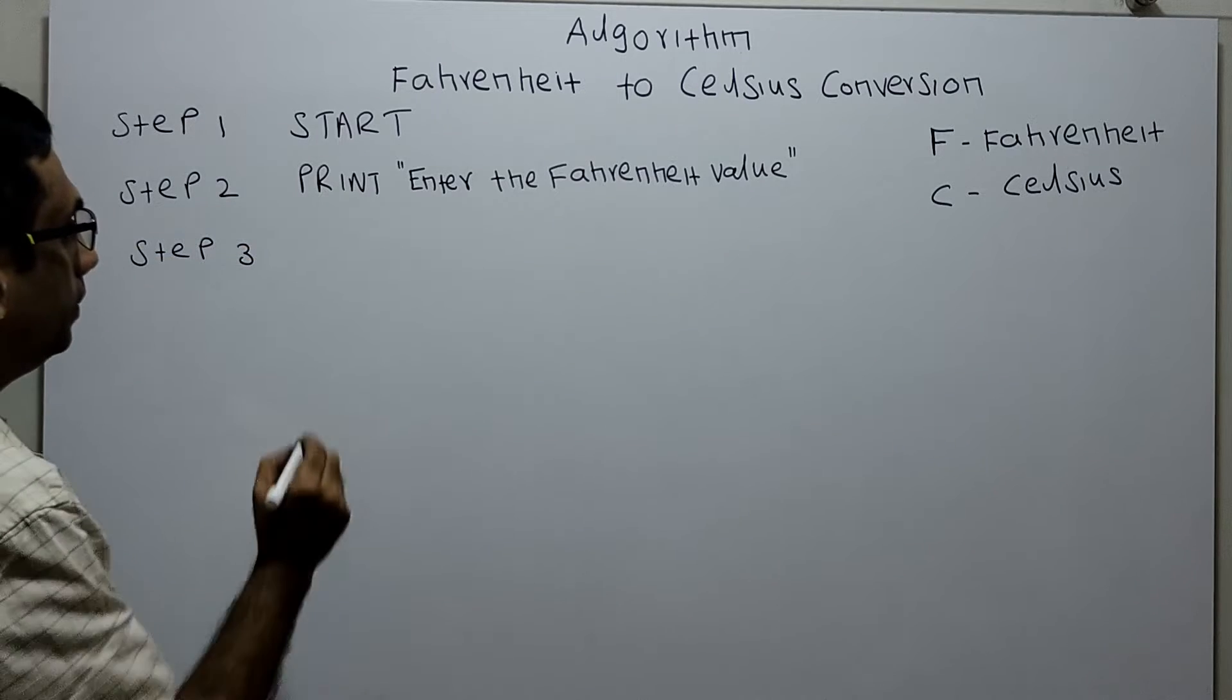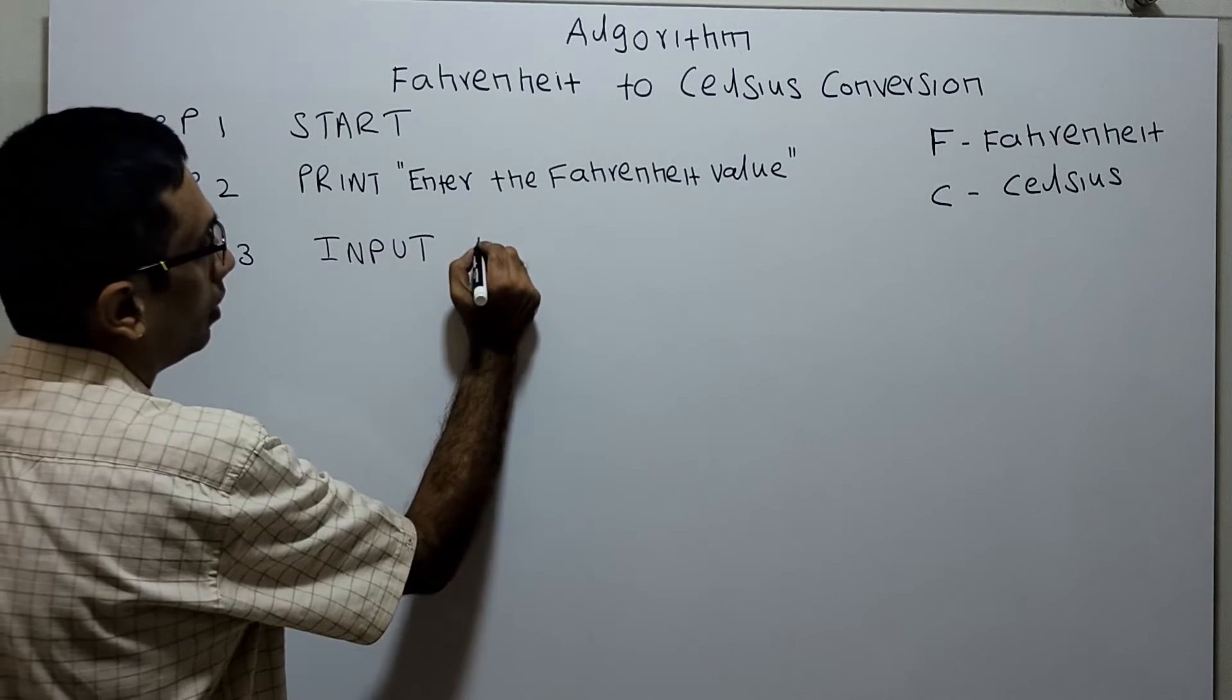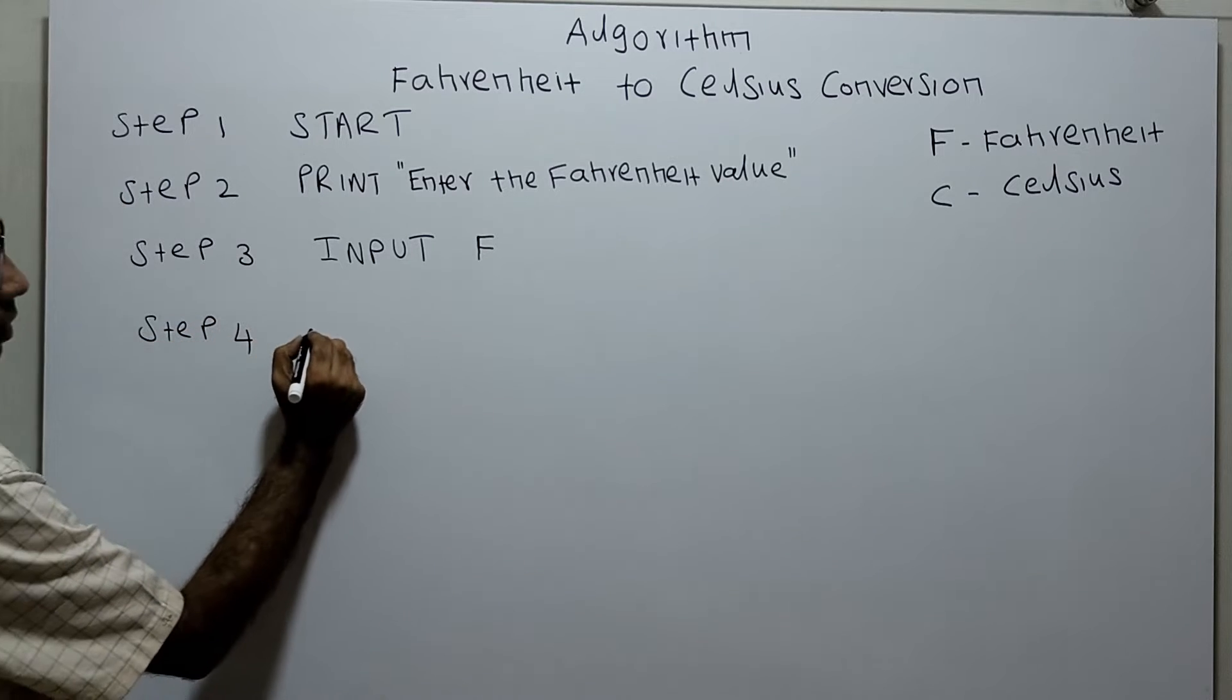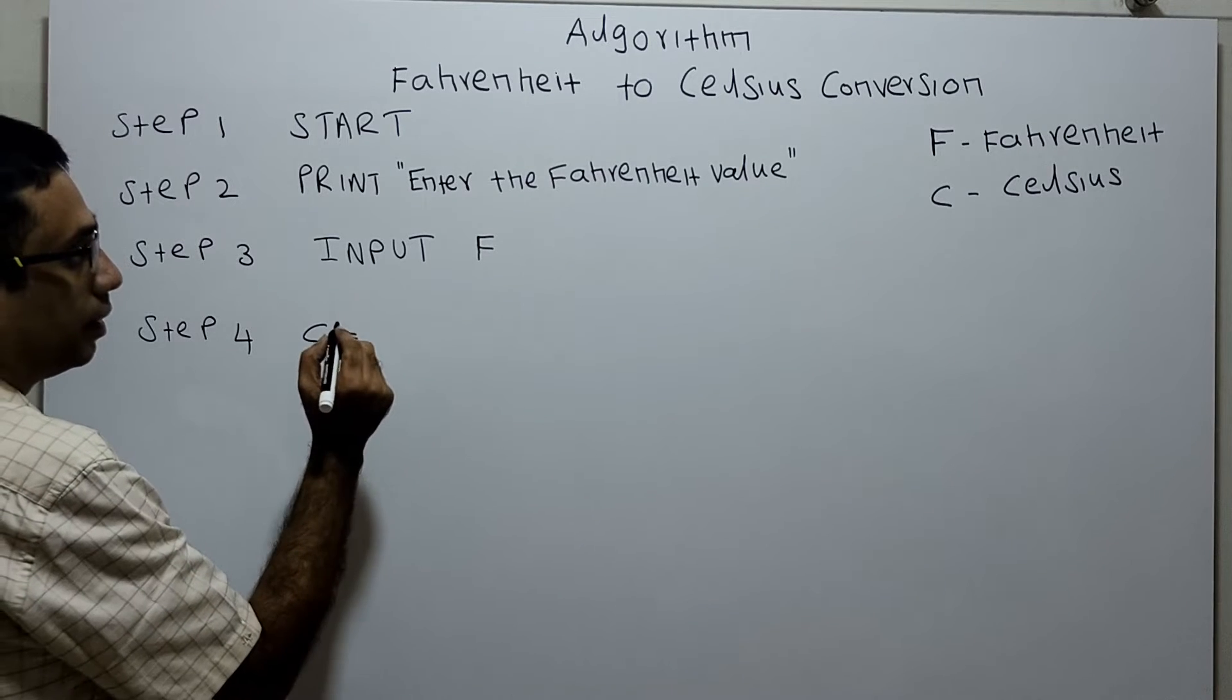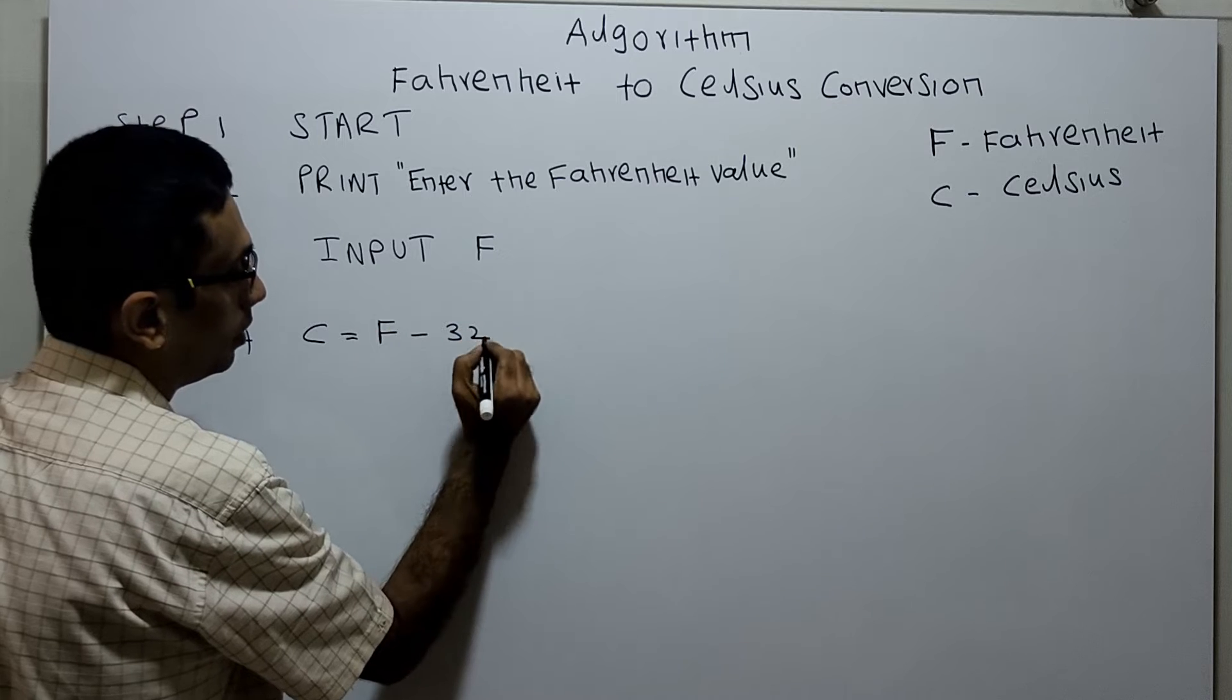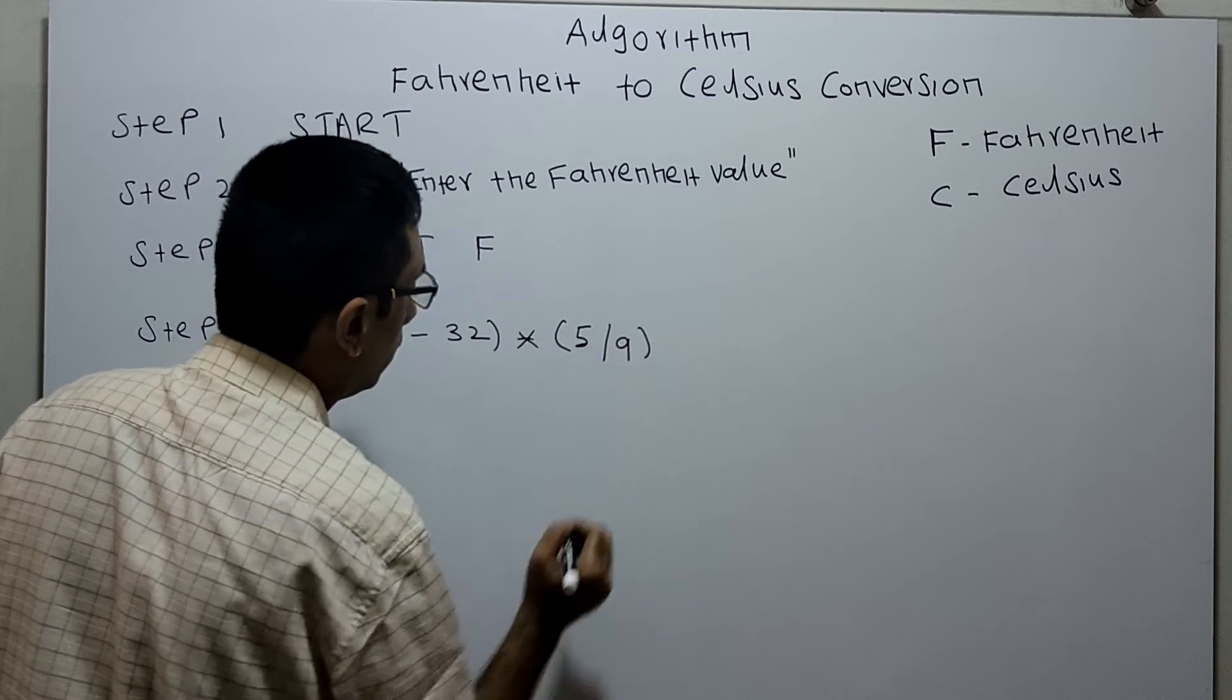Next, I am calculating the Celsius. Step four: C equals the formula to calculate the Celsius from the Fahrenheit. The value of Fahrenheit minus 32, multiplied by 5, divided by 9.